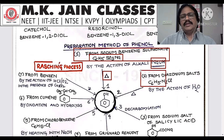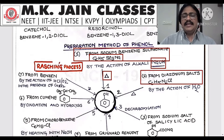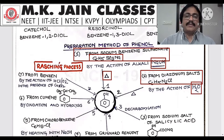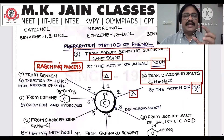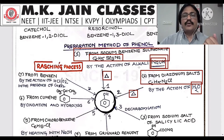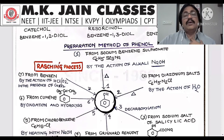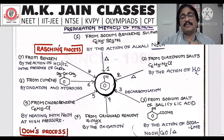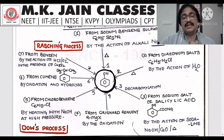Number two: from diazonium salt — the formula is C6H5N2Cl. My purpose with the power map is that you know what you can make phenol from. By the action of water (hydrolysis), you will get phenol. Organic chemistry always says: look at me once, look at me a thousand times — I am something to be seen again and again. The more you look at organic chemistry, the more you will learn it, and learn it for a long time.